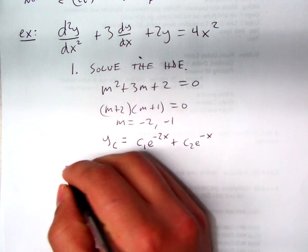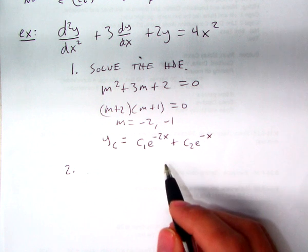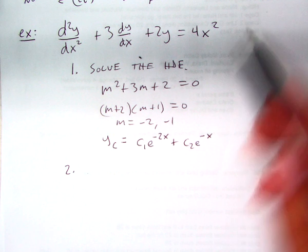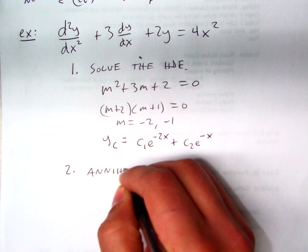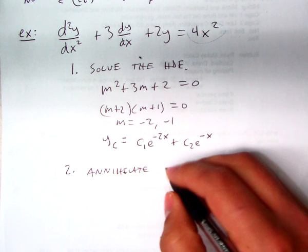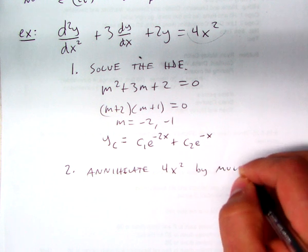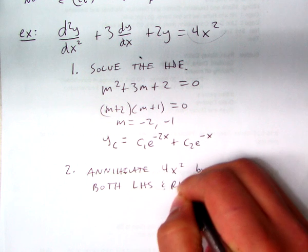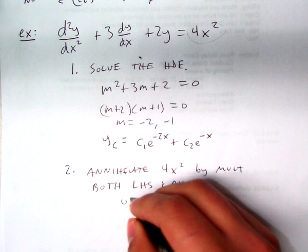So far we haven't done anything unusual, except for the fact that we've ignored this 4x squared. So now we're going to pay attention to it. And what we're going to do, since we pretty much only know how to solve these when they're equal to 0, is actually make this equal to 0. And we can do that by annihilating it. So we're going to annihilate this function over here.